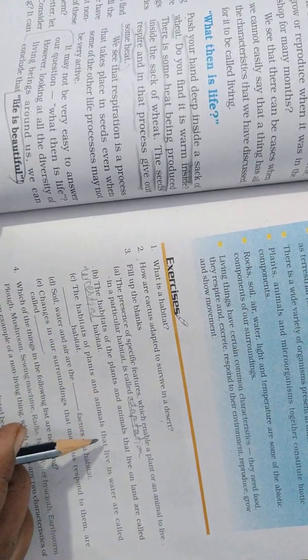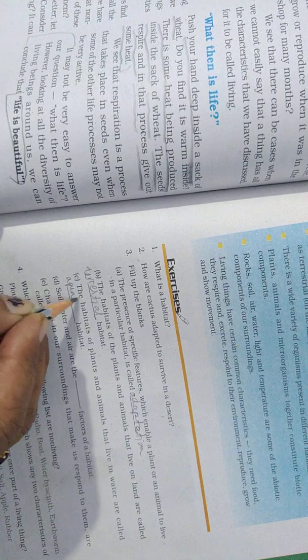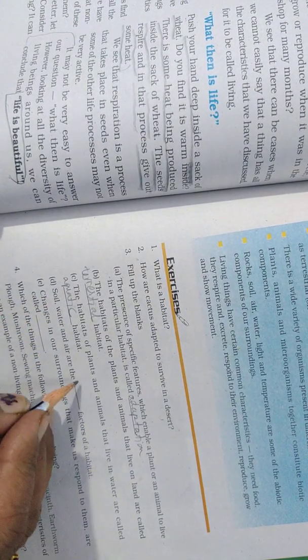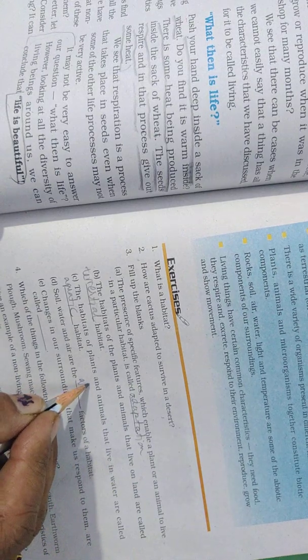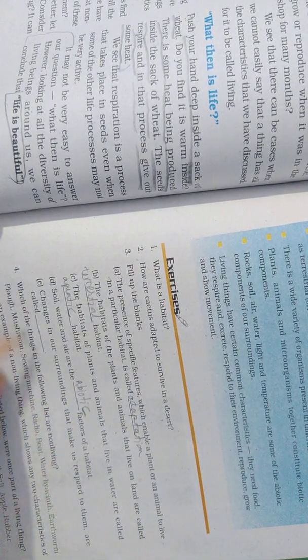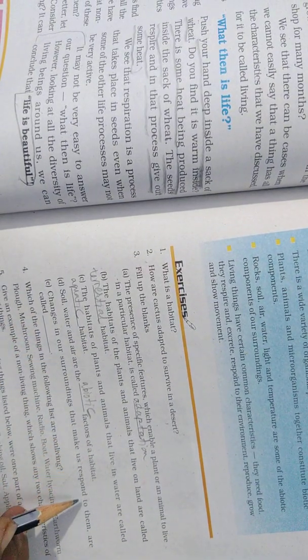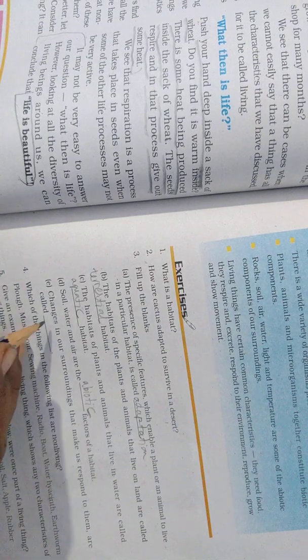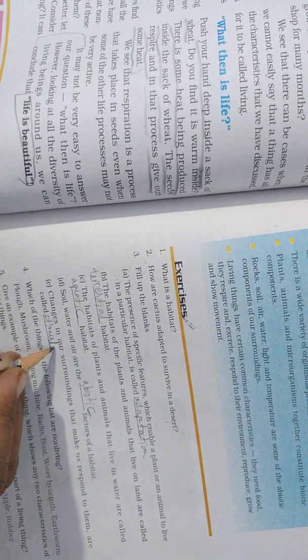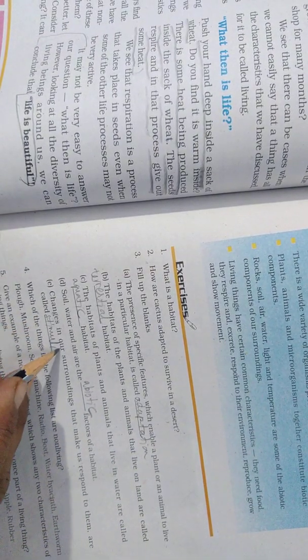The habitat of plant and animal that live in water are known as aquatic habitat. Soil, water and air are abiotic components of the habitat. Changes in surrounding that make us respond to them are known as stimuli.